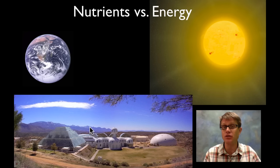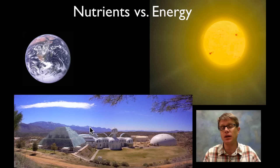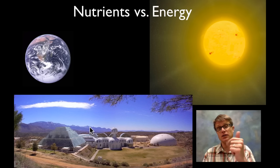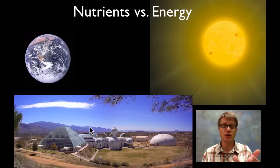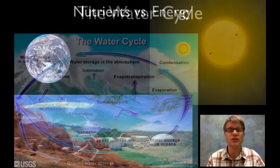Remember what we're talking about is biogeochemical cycling — how do we go from living to non-living? And so on the next four slides what I want you to think about is with each of these cycles — from the water to the carbon to the nitrogen to the phosphorus — where is most of that nutrient stored? How does it get into plants? And then how does it get into animals? And then how does it get back again?